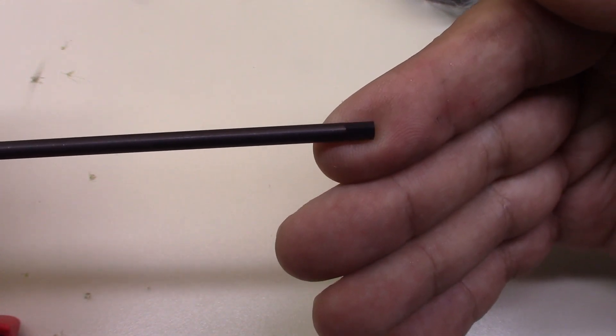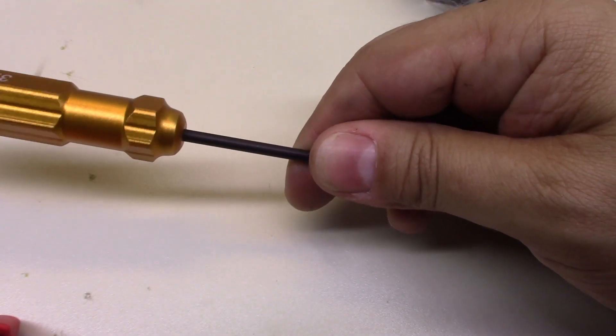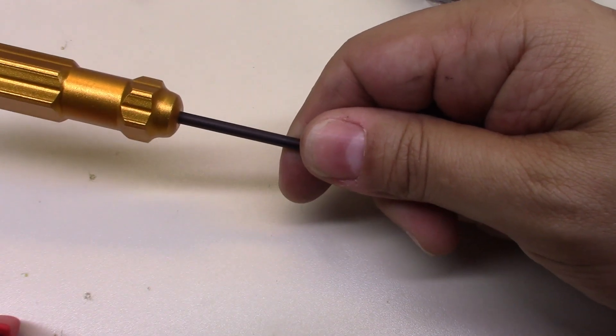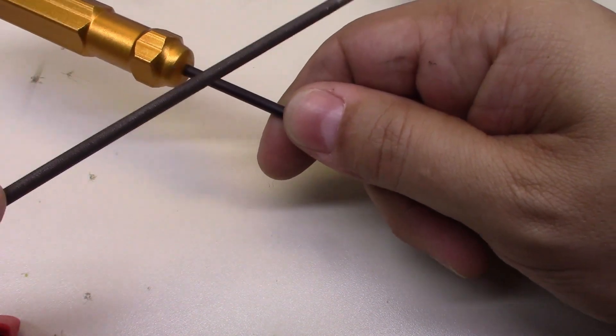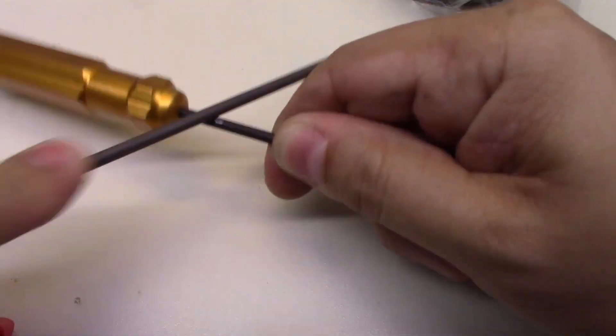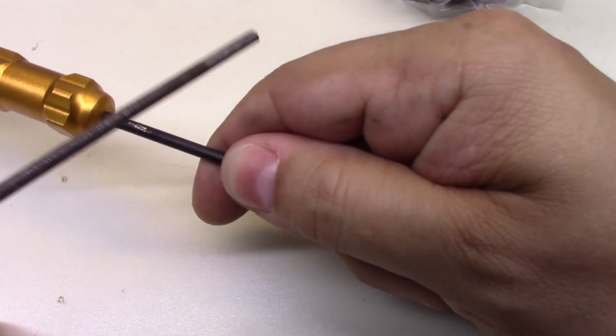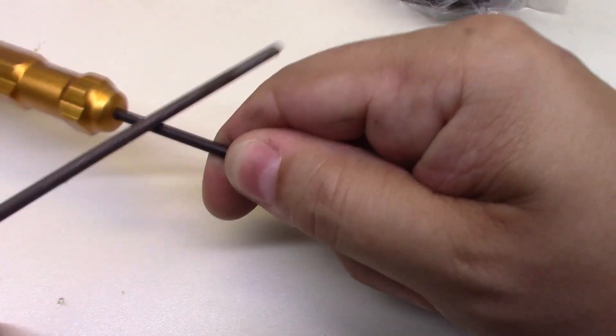There are no blemishes or imperfections that I could find. I wanted to see how hard this is, see if the bit itself is hardened. So let's get a file in here and see if that bites. I'm getting a tiny bit of bite, but that's mostly skating.